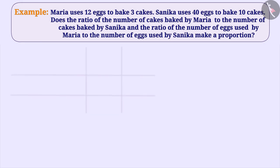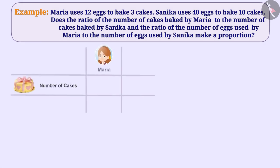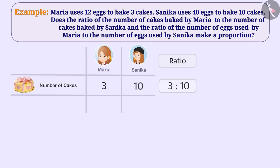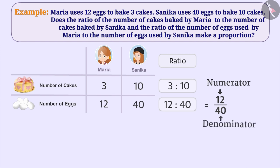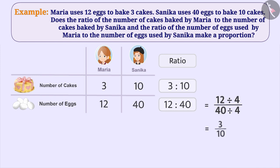Here, the ratio of the number of cakes baked by Maria to the number of cakes baked by Sanika is 3 is to 10. Similarly, the ratio of the number of eggs used by Maria to the number of eggs used by Sanika is 12 is to 40. We can write 12 is to 40 as 12 by 40. If we divide the numerator 12 and the denominator 40 by 4, then we will get the fraction 3 by 10, that is 3 is to 10.